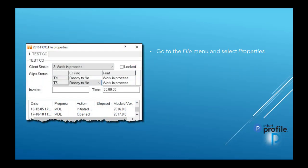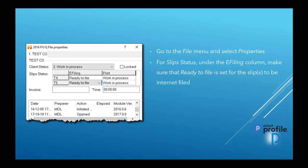Next, go to the File menu and select Properties. When you're in that window, look for Slip Status and under the e-filing column, make sure Ready to File is set for the slips to be internet filed. In this example, you have T4 and T5, and you've selected the dropdown for Ready to File for each one.